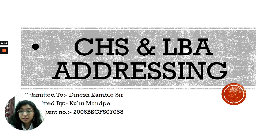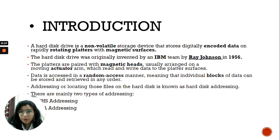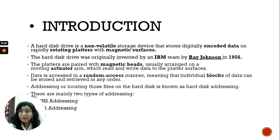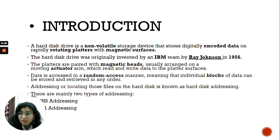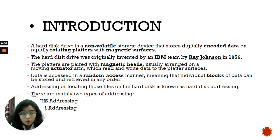CHS and LBA Addressing are some methods that are used in hard drives. A hard drive is a non-volatile storage device that stores all your data digitally in an encoded form, rapidly on a rotating platter with magnetic surfaces. The hard drive was originally invented by an IBM team by Ray Johnson in 1956. All your data is accessed in a random access manner, meaning that the individual blocks of data can be stored and retrieved in any order. The process of addressing and locating those files in the hard disk is known as hard disk addressing.